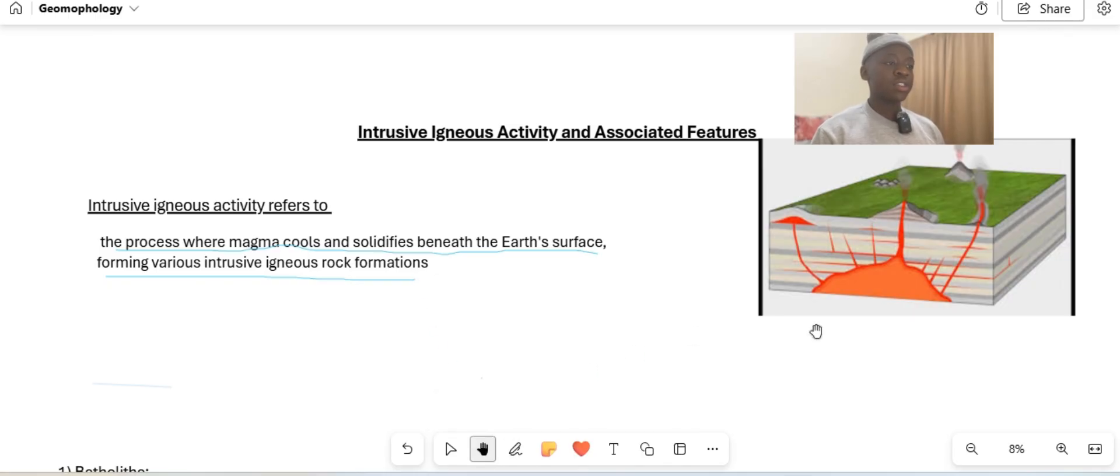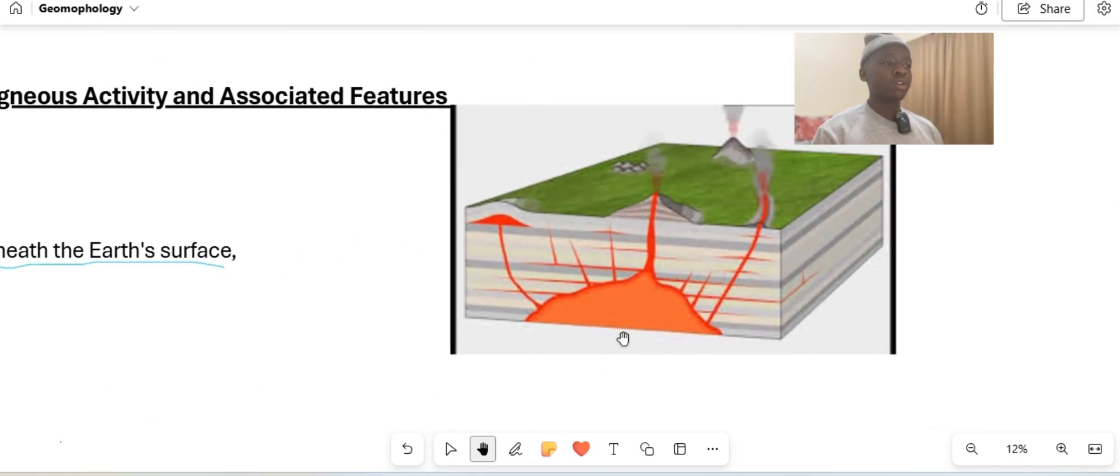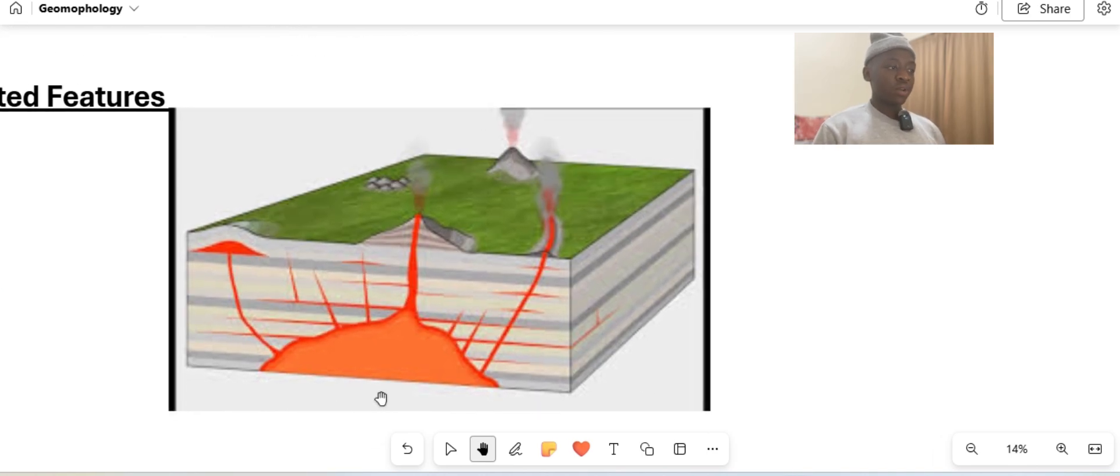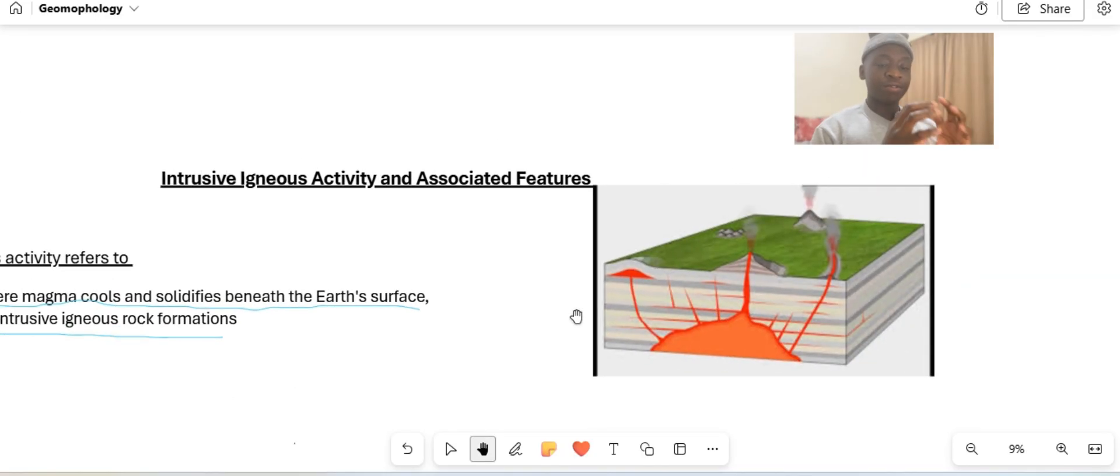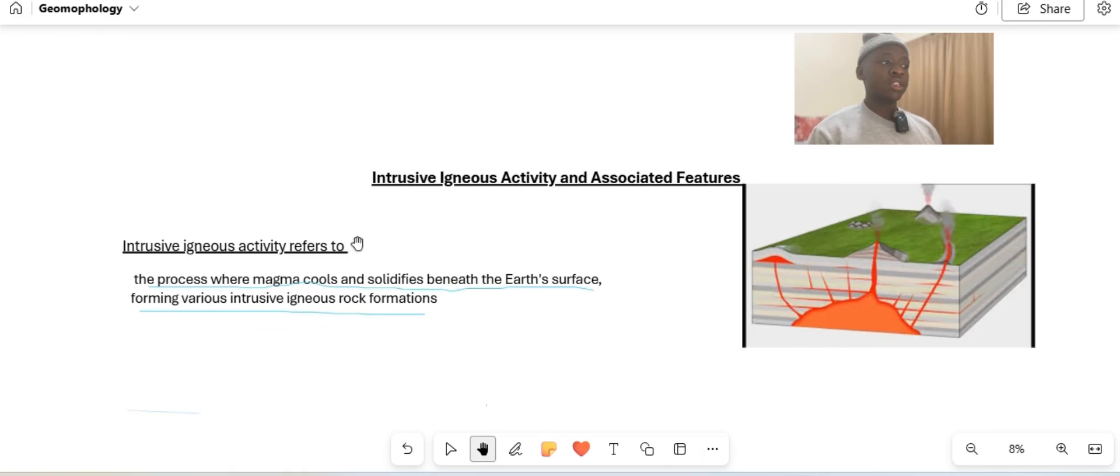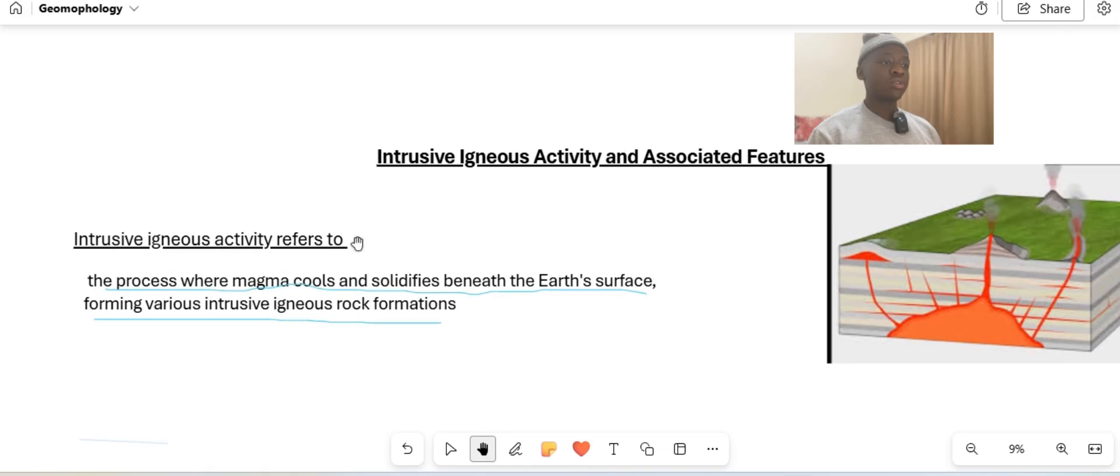So magma is this yellowish thing on this diagram. When this yellow thing cools and solidifies, it will form a strong material, which is referred to as an igneous rock. Hopefully, you now understand how igneous rocks are formed.